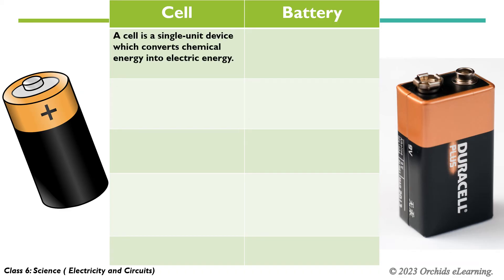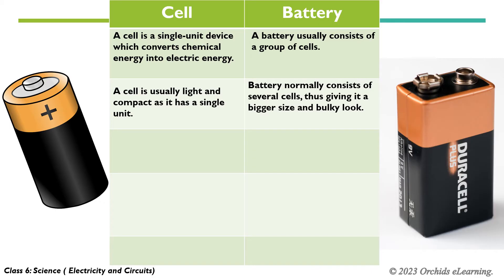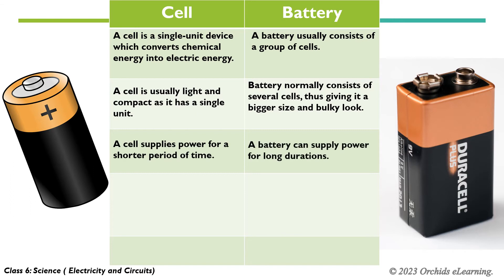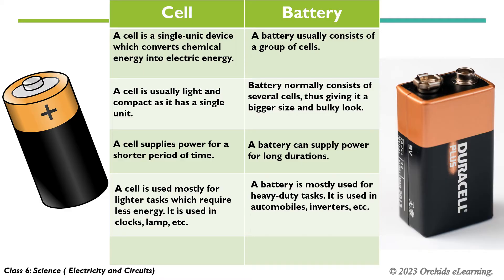A cell is a single unit device that converts chemical energy into electric energy, while a battery usually consists of a group of cells. A cell is usually light and compact; the battery is bigger and bulky. A cell supplies power for a shorter period; a battery can supply power for long durations. A cell is used for lighter tasks like clocks and lamps, while a battery is used for heavy duty tasks such as automobiles and inverters. Cells are usually cheap; batteries are much costlier.